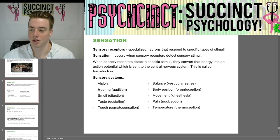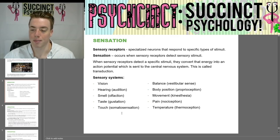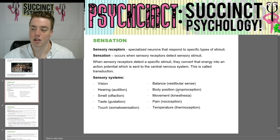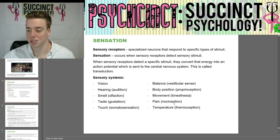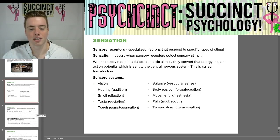Sensory systems are made up of vision; hearing, or audition; smell, olfaction; taste, gustation; touch, somatosensation; balance, vestibular sense; body position, proprioception; movement, kinesthesia; pain, nociception; and temperature, thermoception. Pretty much all of those have '-ception' at the end.